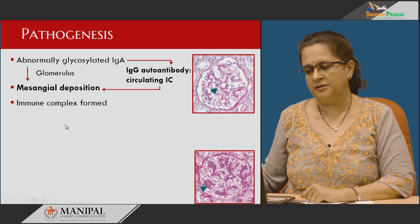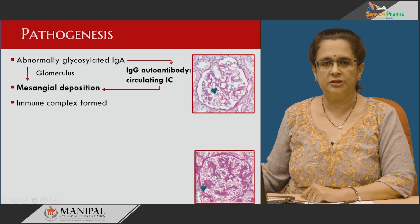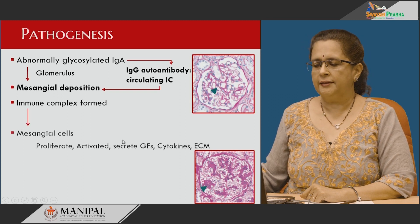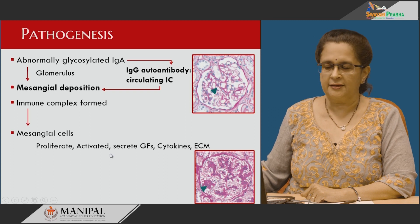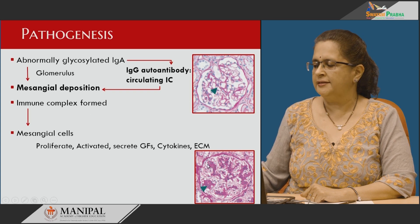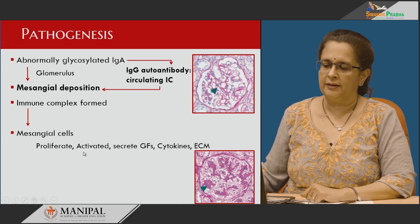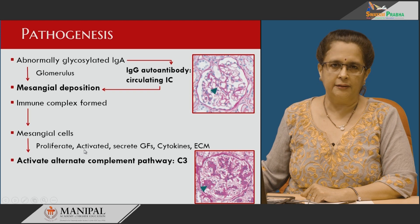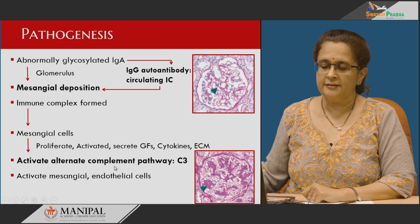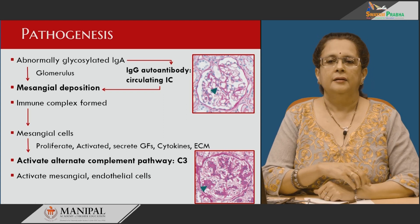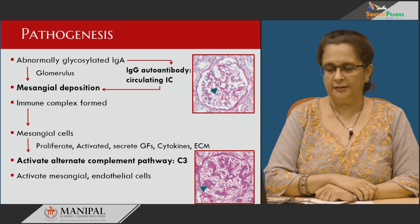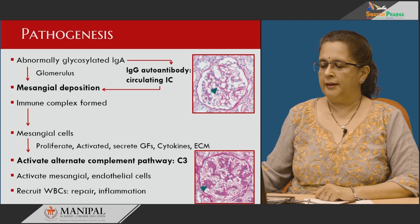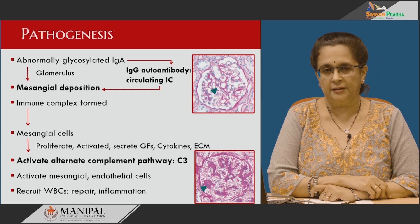Both of these give rise to expansion of the mesangium. The immune complexes stimulate the mesangial cells to proliferate; they get activated and secrete growth factors, cytokines, as well as extracellular matrix, causing mesangial expansion and mesangial hypercellularity. These in turn activate the alternate complement pathway, increasing C3 deposition. The activated mesangial cells and endothelial cells secrete cytokines that recruit WBCs to that location, where activated WBCs are involved in inflammation as well as removal of some immune complexes.